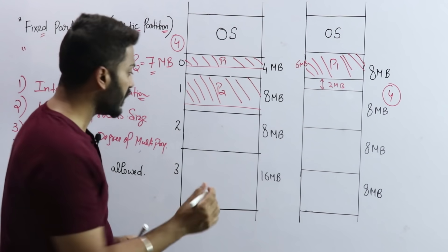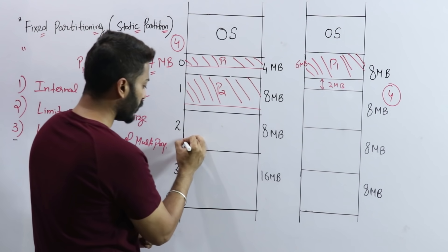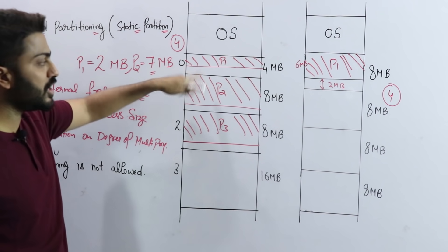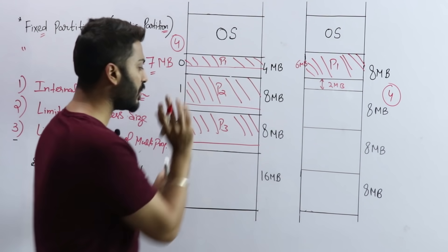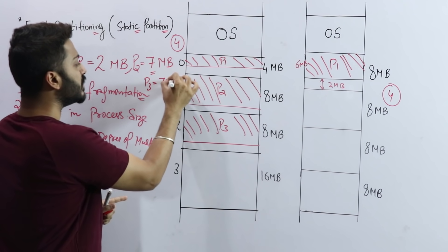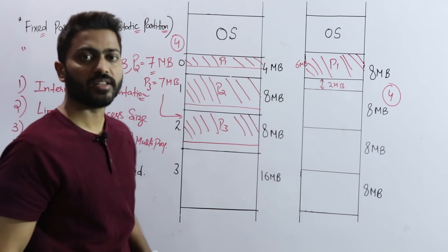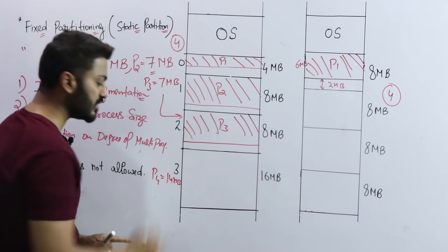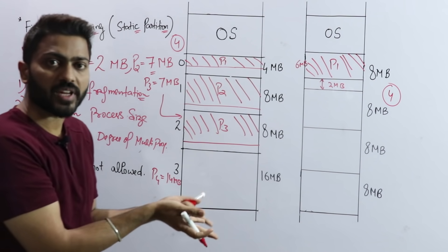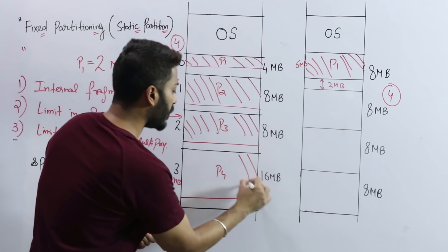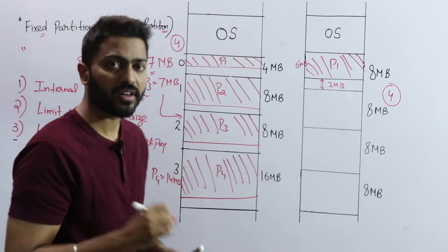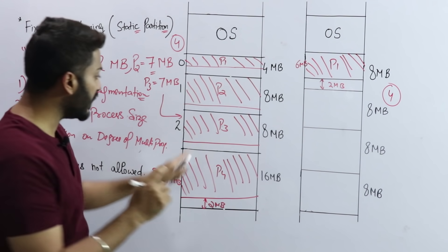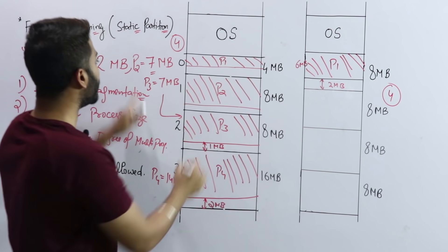Continuing with the second diagram — P3 arrives with size 7MB, placed in a free 8MB slot. P3 is accommodated with 1MB internal fragmentation. Then P4 arrives with size 14MB — placed in the 16MB slot, leaving 2MB wasted as internal fragmentation. Now all 4 partitions are occupied: P1 (with 2MB waste), P2 (with 1MB waste), P3 (with 1MB waste), and P4 (with 2MB waste).